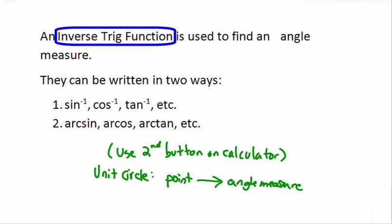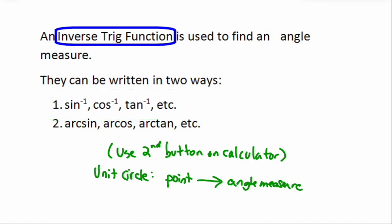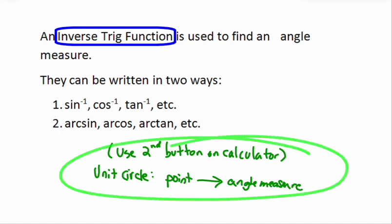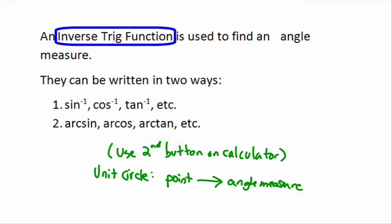An inverse trig function is used to find an angle measure. There are two notations: the negative-1 notation — that little negative-1 does not mean an exponent, it means we are undoing and finding an angle measure. Some older or European textbooks use the notation arc sine, arc cosine, arc tangent, etc. The only time you use the second button on your calculator is when you are finding an angle measure.